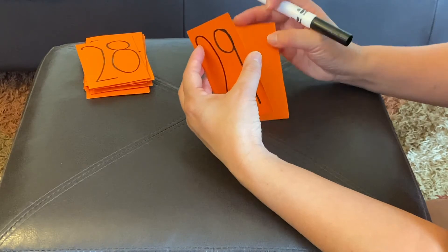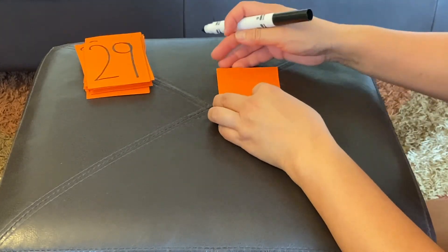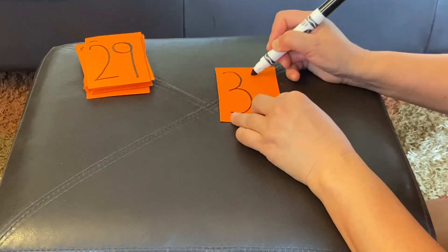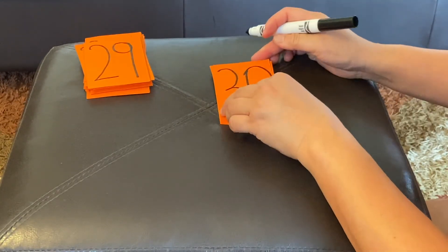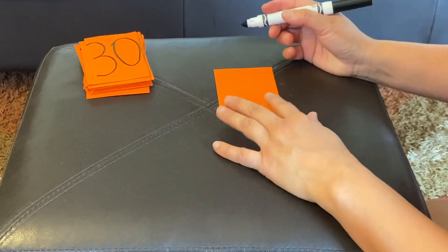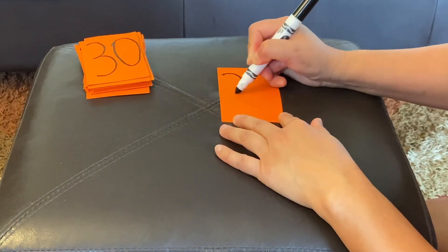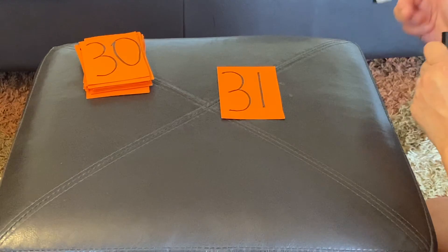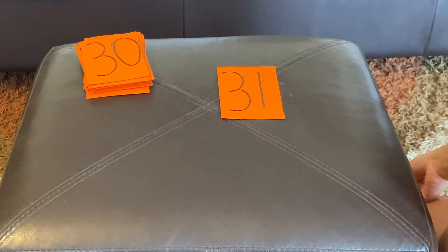And thirty. Thirty. A three, and a zero. I have one more, so let's go ahead and do thirty-one. Thirty-one. There you go.